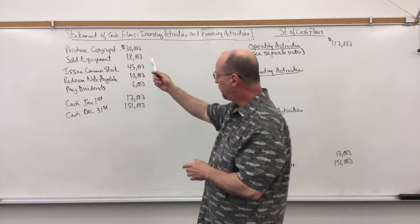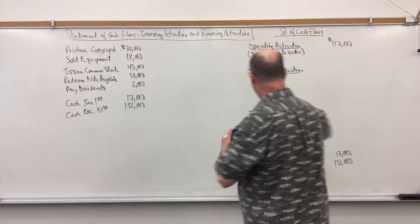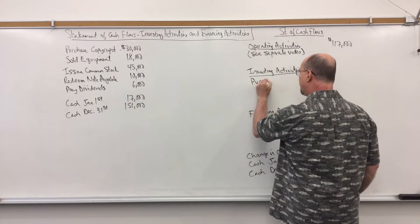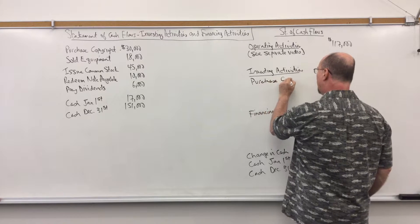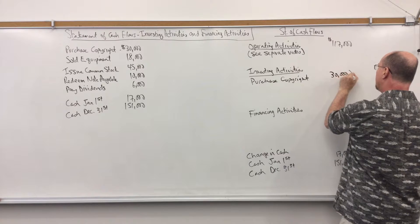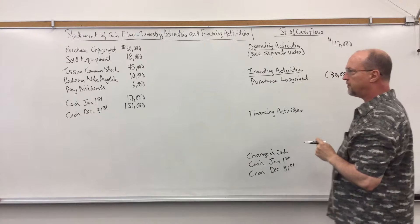So we purchased a copyright for $30,000. So in the investing activity section I simply put purchase copyright and that's $30,000 and I'll put brackets around it since that is a use of cash.